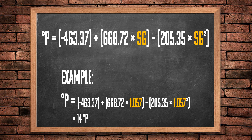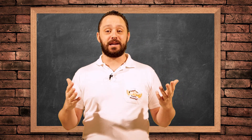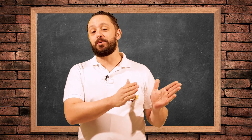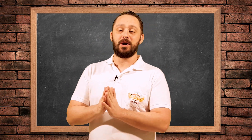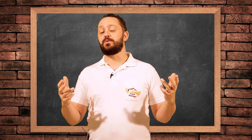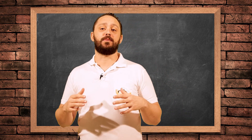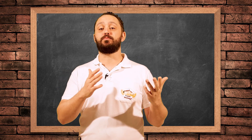To calculate Plato from SG, simply take your SG values and plug them into the spaces highlighted in orange in the formula above. In our example beer this gives us 14 degrees Plato. The Plato scale is a representation of the amount of sugar within a particular volume — 1 degree Plato is equivalent to a 1% sugar solution. SG on the other hand refers to the density of different liquids, with water being 1.000.